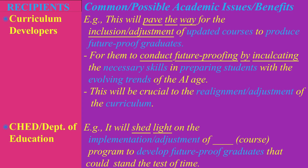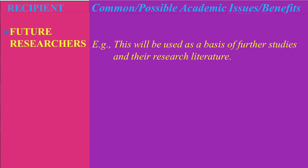For the benefit of the Ministry of Education — which we call the Department of Education and Commission on Higher Education in the Philippines — here are examples: 'It will shed light on the implementation and adjustment of the K-12 program to develop future-proof graduates that could stand the test of time.' This could also be applicable to any courses in college. And the last item is future researchers, which we put at the bottom of all beneficiaries. It is commonly written like this: 'This will be used as a basis of further studies and their research literature.'